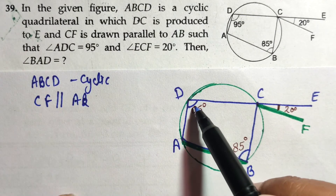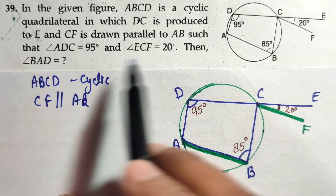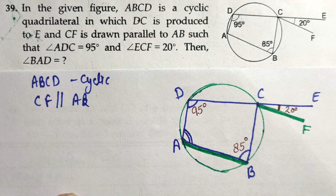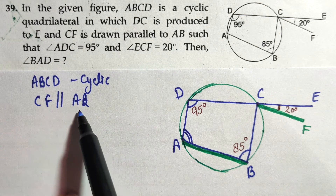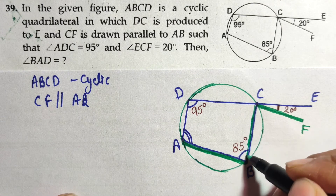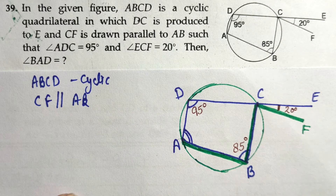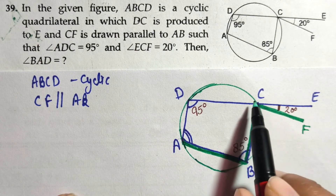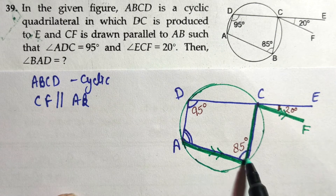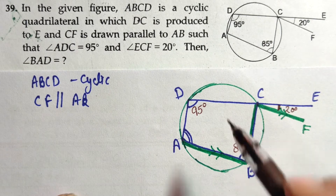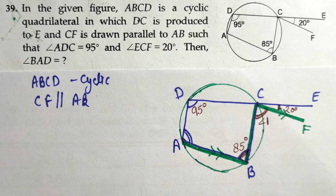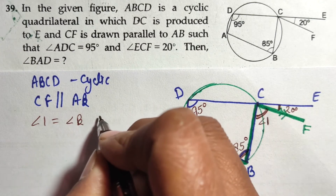ABCD is cyclic, and CF is drawn parallel to AB. The given angles are: angle ADC is 95 degrees, angle BCE is 20 degrees, and angle DCF is 85 degrees. We have to calculate angle BAD. Let's mark which angle we need to find. The two parallel lines are CF and AB, highlighted here.